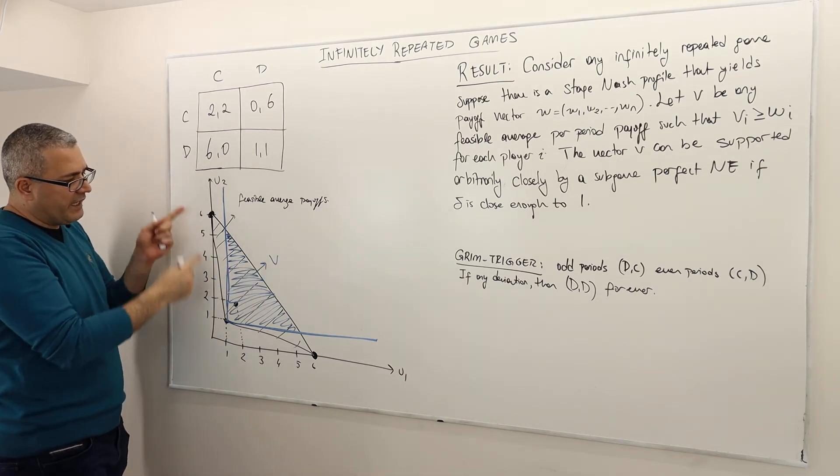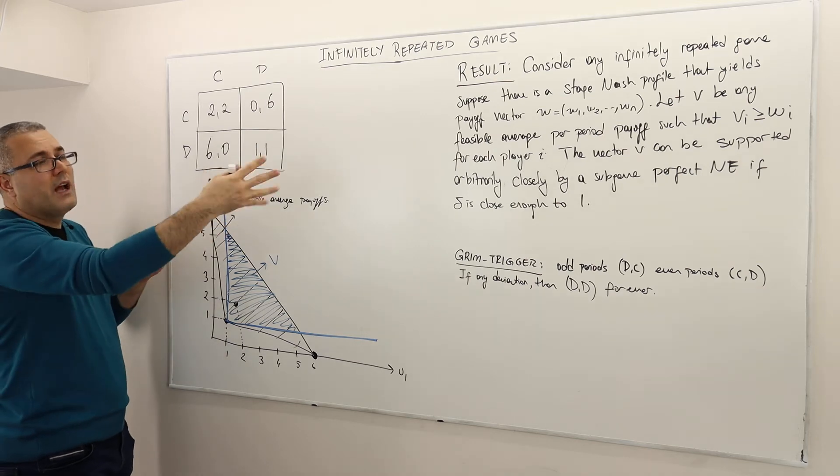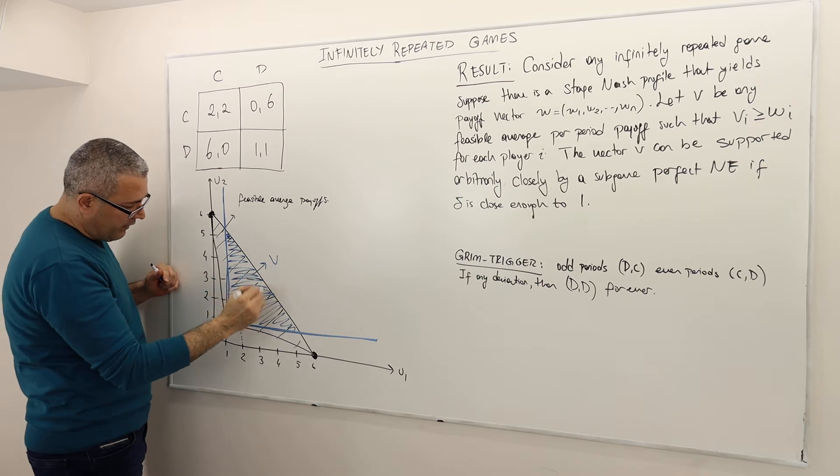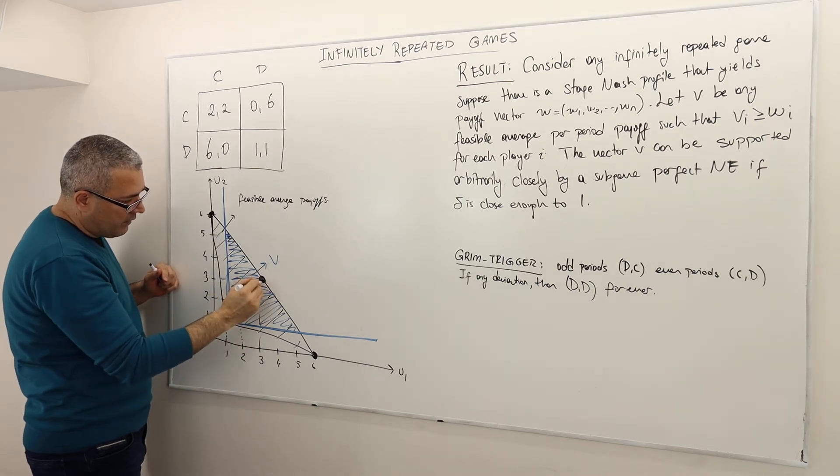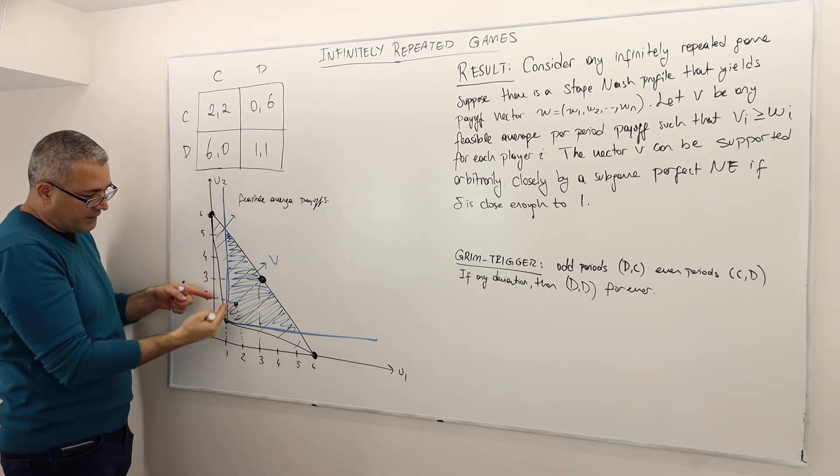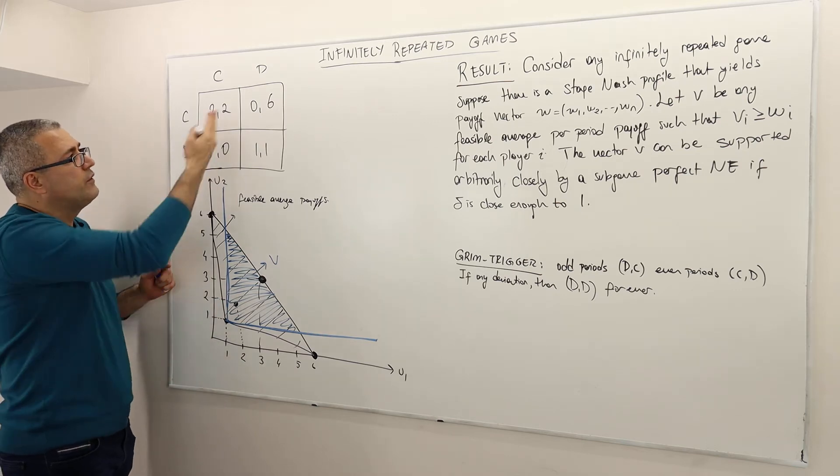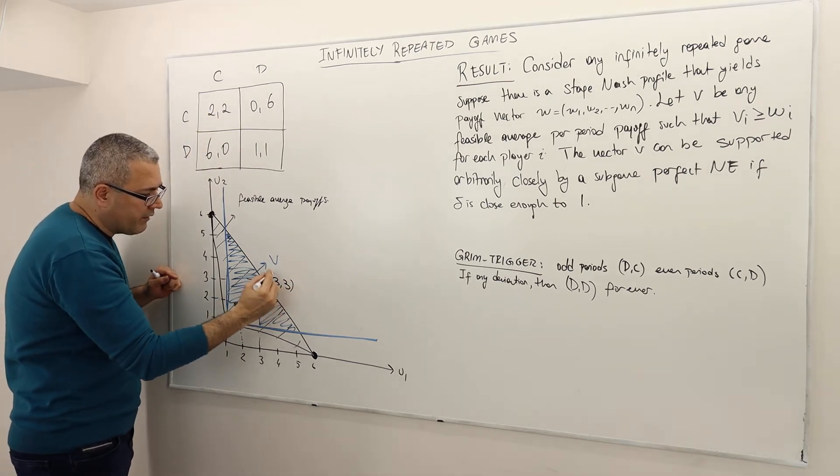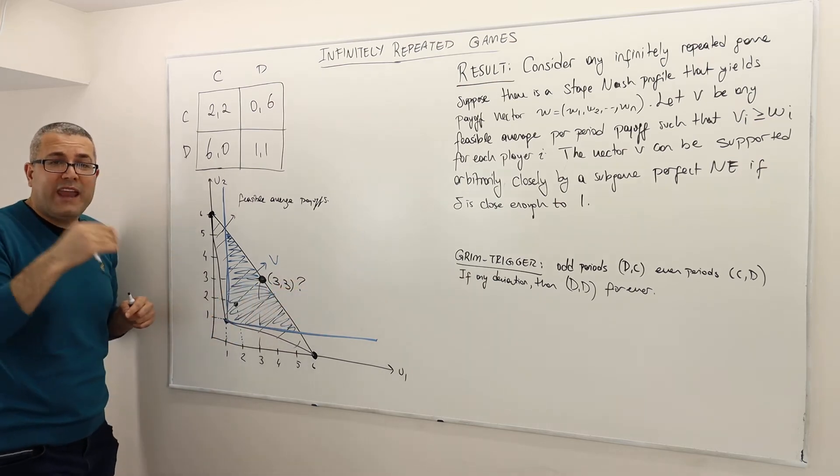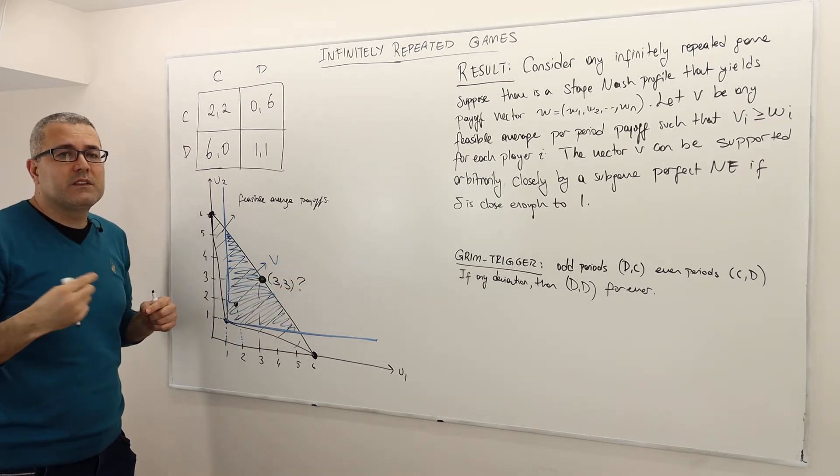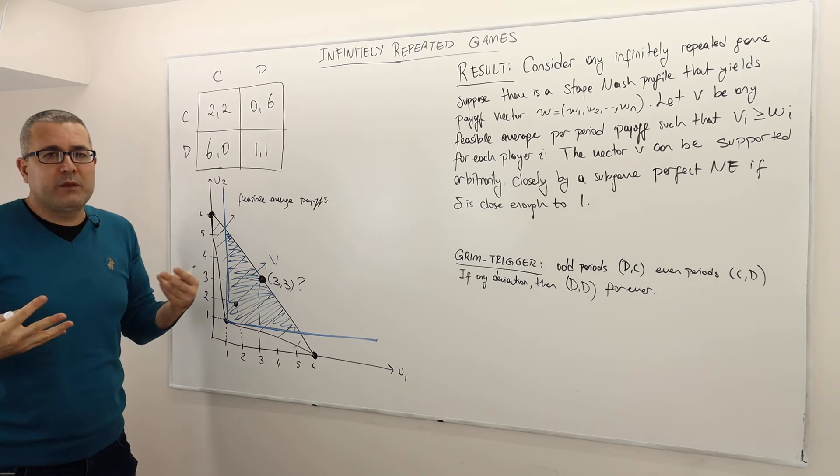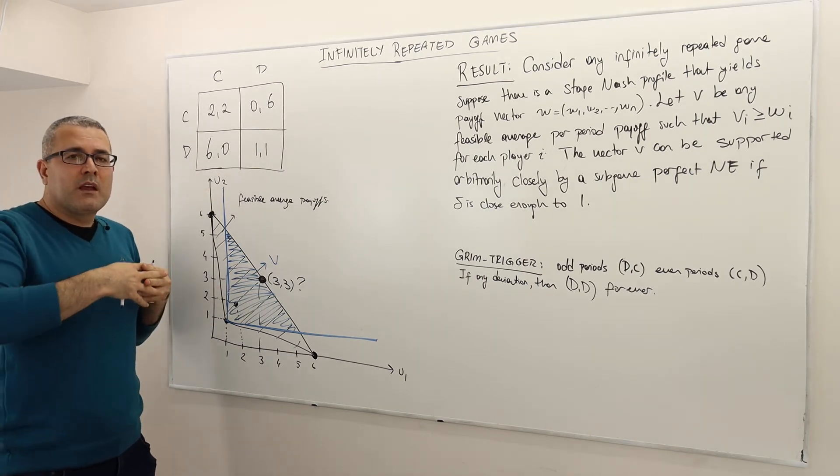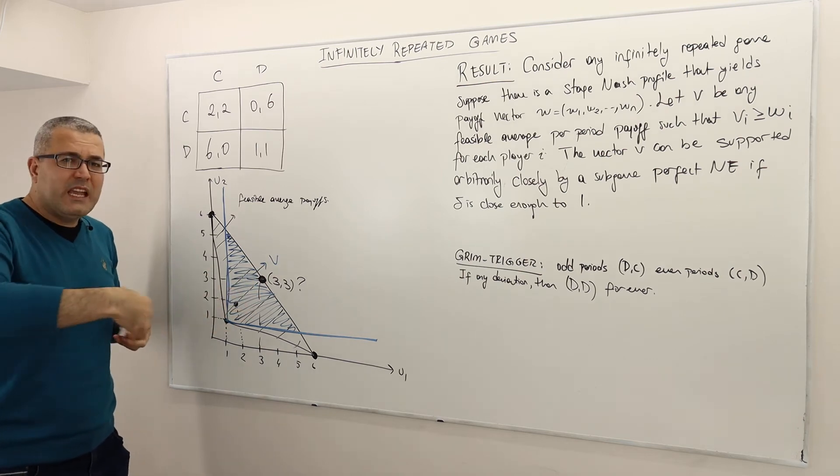So that means 0,6 cannot be supported as an equilibrium according to this result. But it says, for example, 3,3 is here, alright? So it's definitely better than 2,2. We know that 2,2 can be supported as an SPNE. But what about 3,3? Can this be supported on average, obviously? Can this be, because there's no way both players can get 3 at the same time in this game, right? But if they play this game Infinite Horizon, can they get close to 3,3?